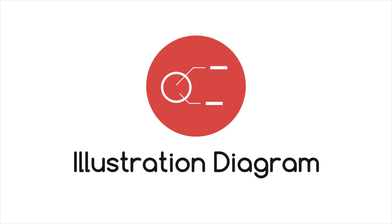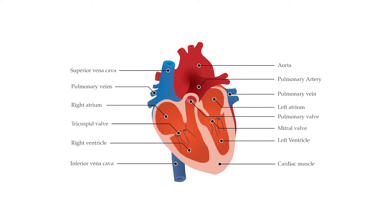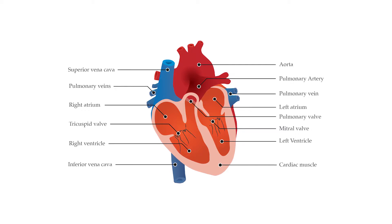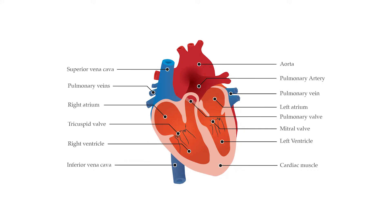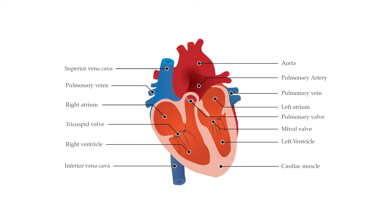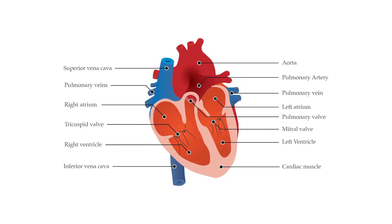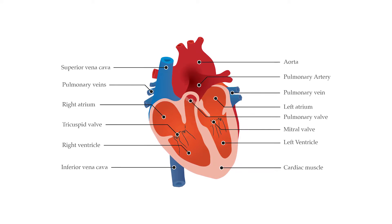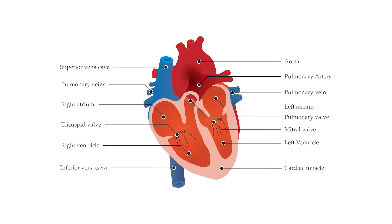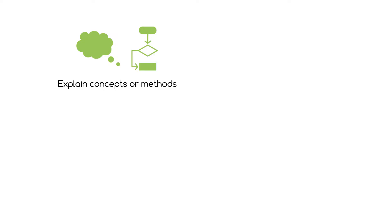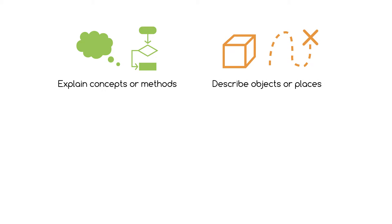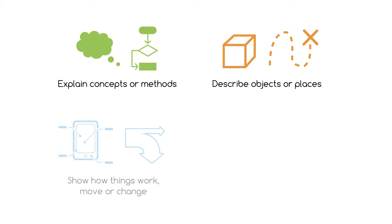Let's look at illustration diagrams. Illustration diagrams are graphics that display an image or images accompanied by either notes, labels, or a legend in order to explain concepts or methods, describe objects or places, or show how things work.